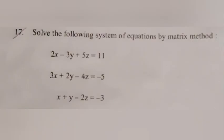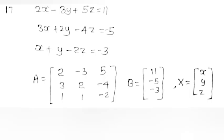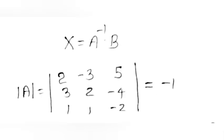Problem 17. Solve the system of equations by matrix method. 2x − 3y + 5z = 11, 3x + 2y − 4z = −5, x + y − 2z = −3. Matrix A = [[2,−3,5],[3,2,−4],[1,1,−2]], B = [11,−5,−3], X = [x,y,z]. X = A⁻¹B. det(A) = −1.